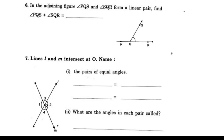Next question: in the adjoining figure, angle PQS and angle SQR form a linear pair. Find angle PQS plus SQR. Since PQS and SQR are a linear pair, the sum of these two angles is 180 degrees.